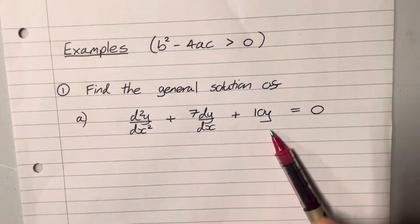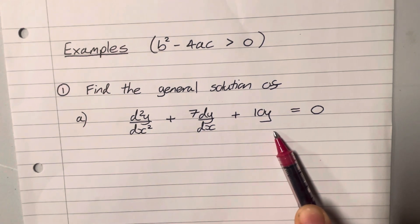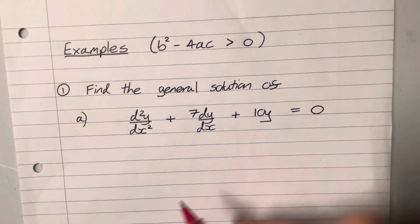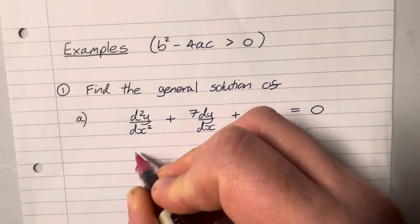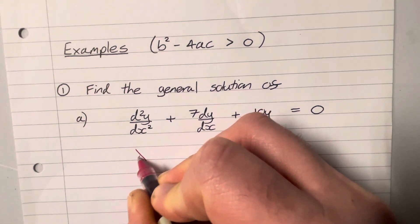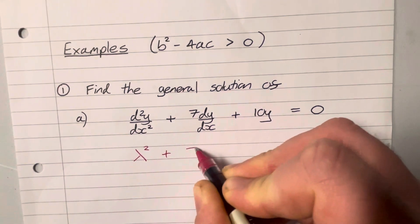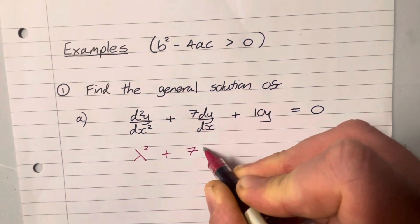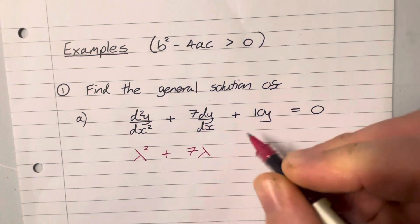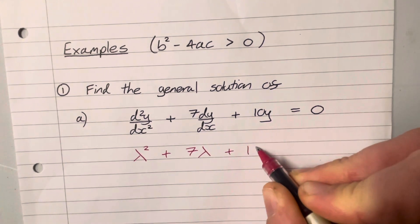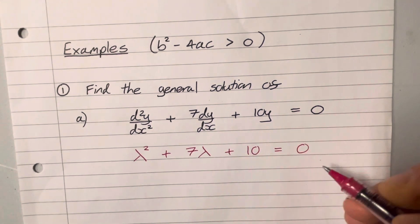We can see that this is a second order linear homogeneous differential equation with constant coefficients, so we're going to apply the auxiliary equation method. We can jump straight from the differential equation to the auxiliary equation — the powers of y are just going to be replaced with powers of lambda.